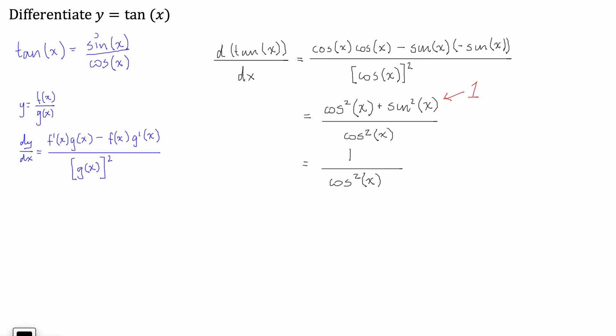Cool. Now, hopefully, you guys know and if you don't you're about to find out, 1 over cos of x is equal to the secant of x. So, 1 over cos squared of x will be equal to sec squared of x.